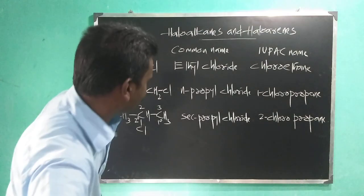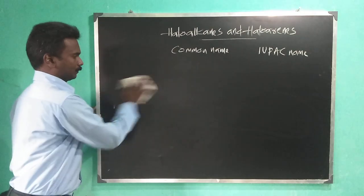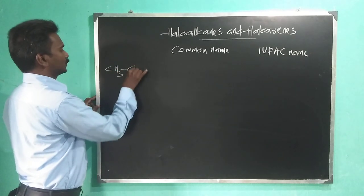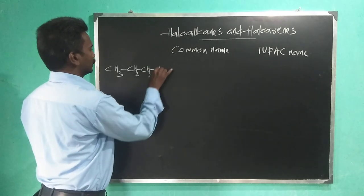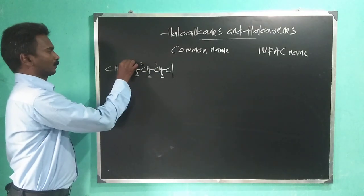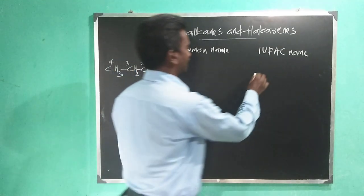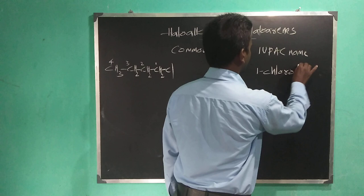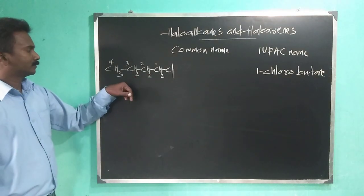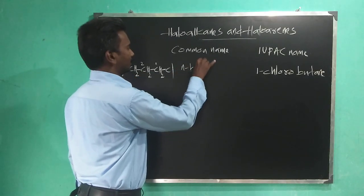Now we go to four carbon atoms: CH3-CH2-CH2-CH2-Cl. The IUPAC name is 1-chlorobutane. The common name, since it is a straight chain compound, is n-butyl chloride.